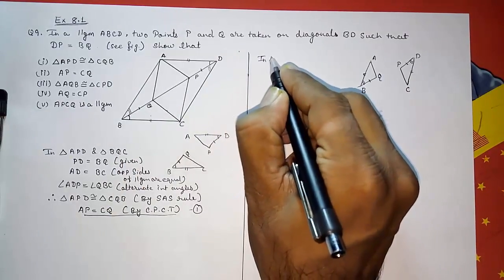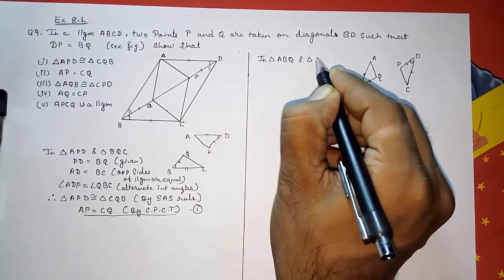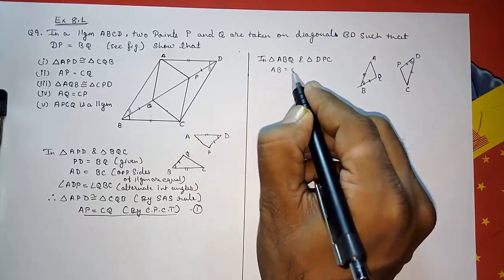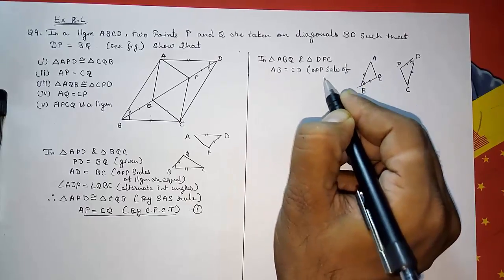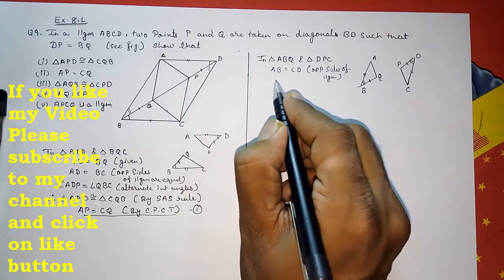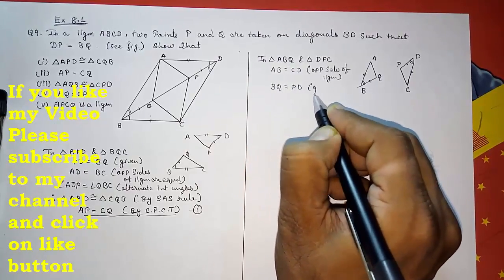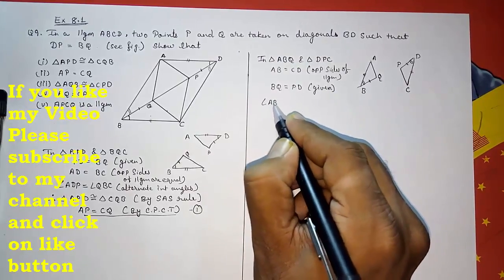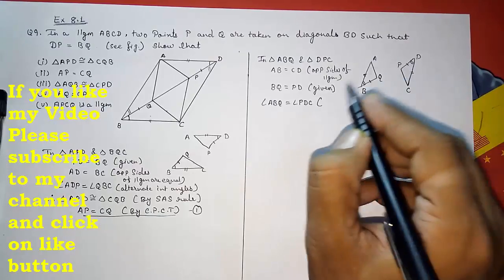In triangle AQB and triangle DPC: first, AB equals CD — opposite sides of a parallelogram are equal. Second, BQ equals PD — given. Third, angle ABQ equals angle PDC — alternate interior angles.